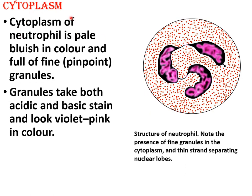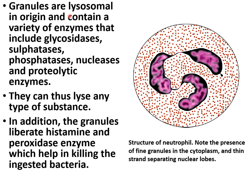The cytoplasm of the neutrophil is pale bluish in color and full of fine pinpoint granules visible throughout the cytoplasm. The granules take both acidic and basic stains and look violet-pink in color. The granules are lysosomal in origin and contain a variety of enzymes including glycosidases, sulfatases, phosphatases, and proteolytic enzymes.